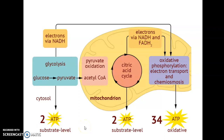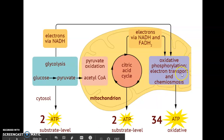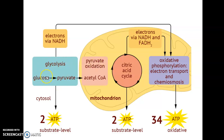This is the fourth video in the video series on cell respiration, where we are going to be talking about oxidative phosphorylation. So far we've discussed glycolysis, which happens in the cytoplasm, and then we've discussed pyruvate oxidation and the citric acid cycle, which happen in the matrix of the mitochondrion. And now we are moving to the inner mitochondrial membrane to discuss oxidative phosphorylation.